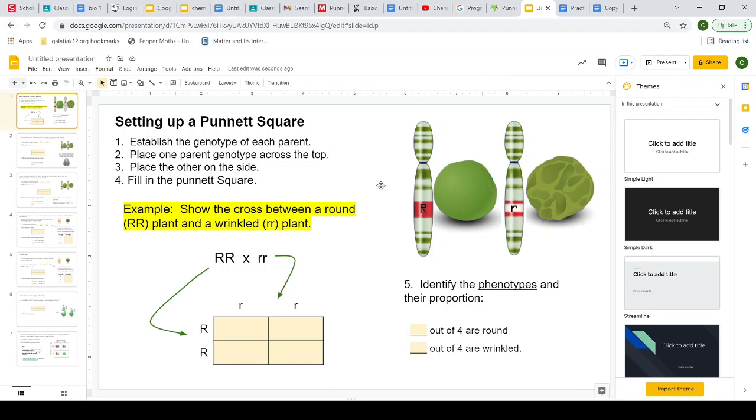So setting up a Punnett square, just once again making sure that you guys are comfortable and okay with this. And if you are then great, but I want to make sure that you are because we are going to get into more advanced genetics. So if you feel like this is super easy then that is amazing because then we will be able to move on. So the first step is establish the genotype of each parent, which means what letters do they have? Like here, do they have a capital and a lowercase? Is it two capitals or maybe two lowercases? Step two is place one parent genotype across the top and place the other across the side. Place the other on the side, which is step three I just talked about. And then number four is fill in the Punnett square.